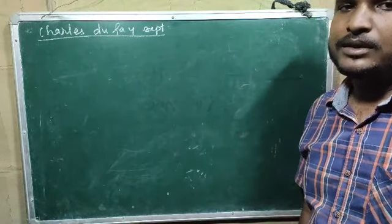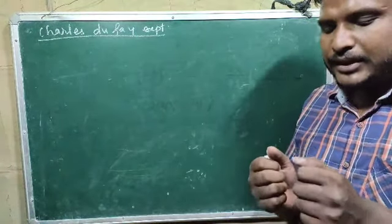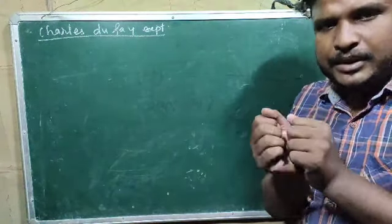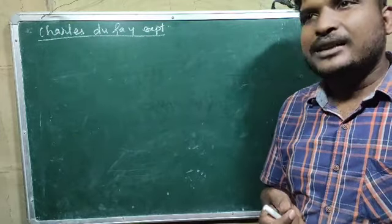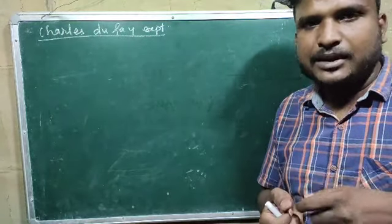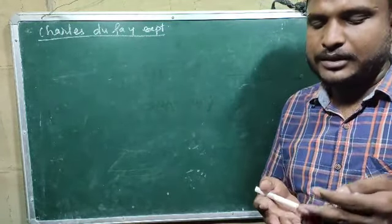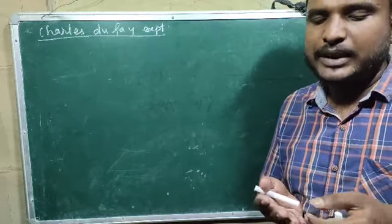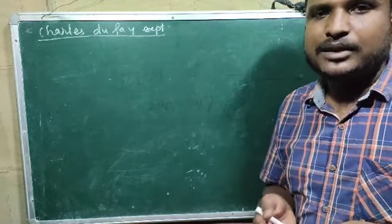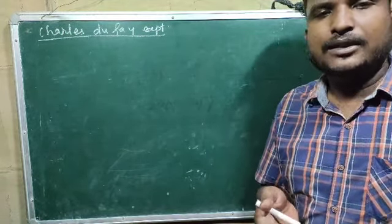So let us see about Charles Dufay's experiment. What he did: he took a glass rod and a silk cloth and he rubbed them. Silk cloth acquired negative charge and glass rod acquired positive charge.